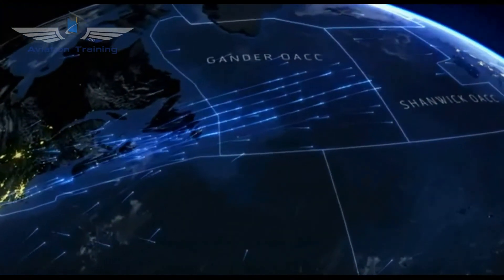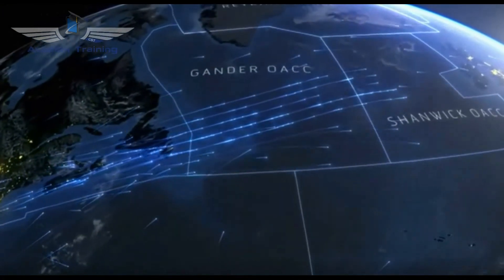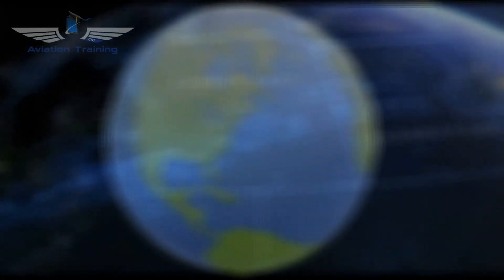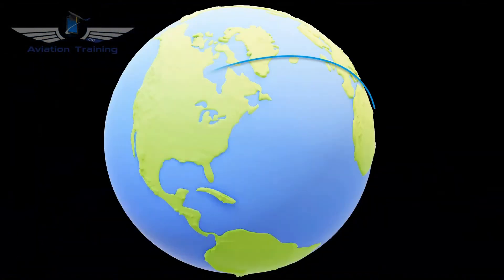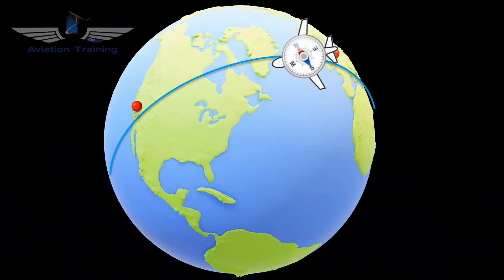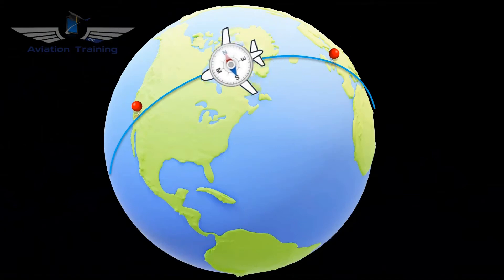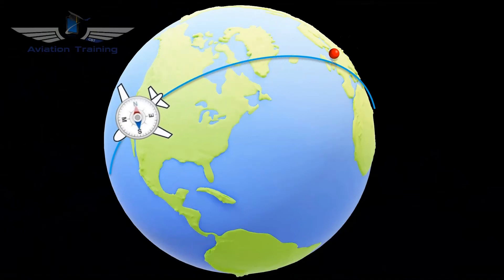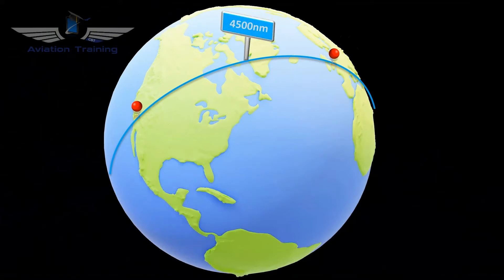However, our initial heading would be different from our final heading. If we flew a Great Circle from Dublin to Los Angeles, our initial track would be 307 degrees, and our final track would be 215 degrees, and the distance would be 4,500 nautical miles.